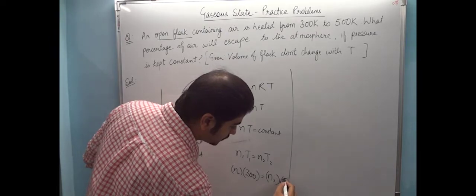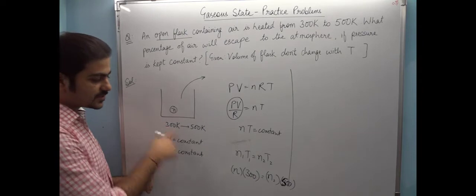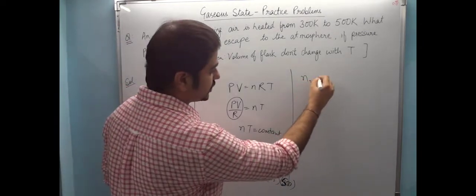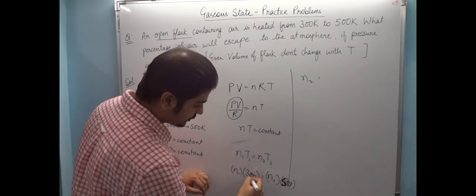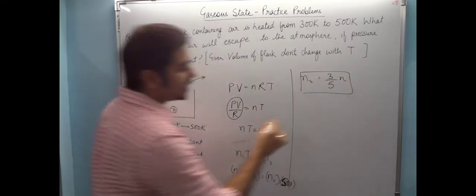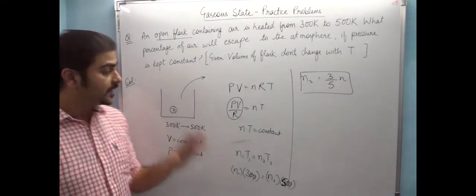So the temperature is 500. From n1T1 = n2T2, we get n × 300 = n2 × 500, and n2 comes out to be 3/5n, which means that when we increase the temperature, 3/5n moles remain in the flask.